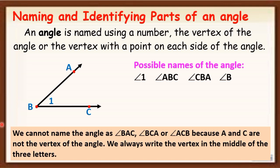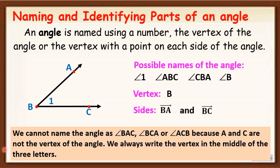Remember, when naming angles using three letters, the vertex must always be in the middle. So when you name an angle, it must be: side, vertex, side. The vertex cannot come first when naming angles. For this given angle, the vertex is B, and the sides are ray BA and ray BC. When we say side, we start from the endpoint going to the point that extends infinitely.